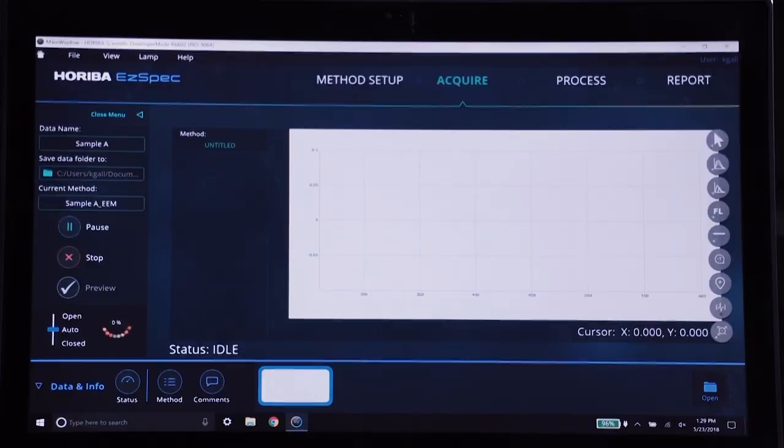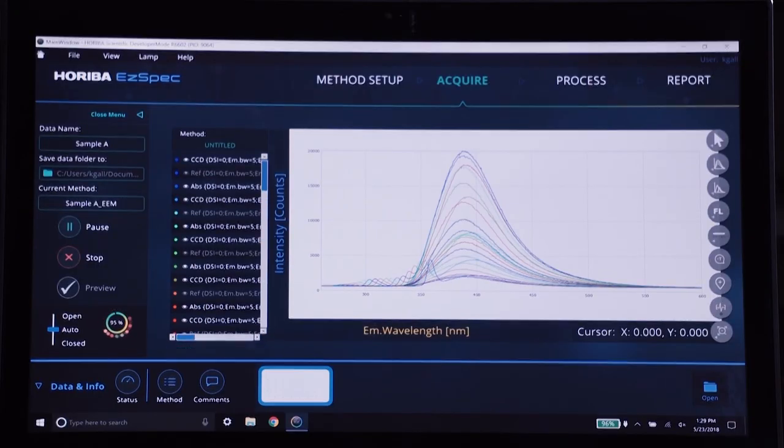So with Duetta, we're really taking fluorescence to the next step, which is to go all in with a very well done CCD based platform that has all the benefits that come with that. We can collect that entire emission spectrum in the blink of an eye. So rather than waiting a few minutes for an entire spectrum, we get it much quicker.